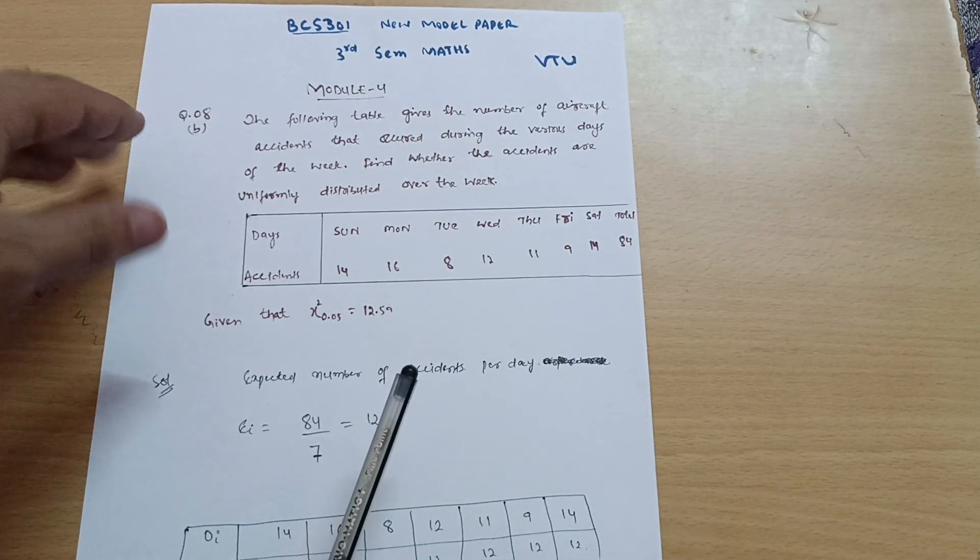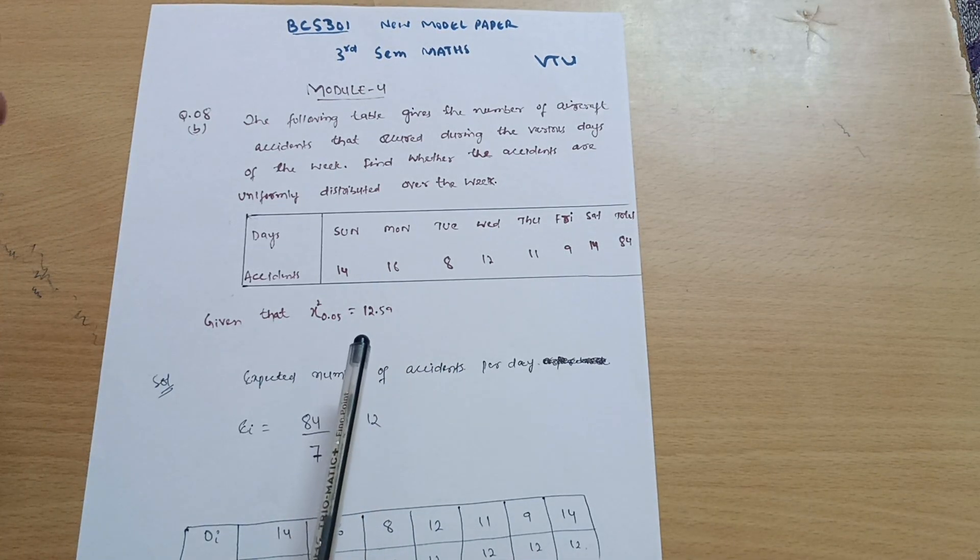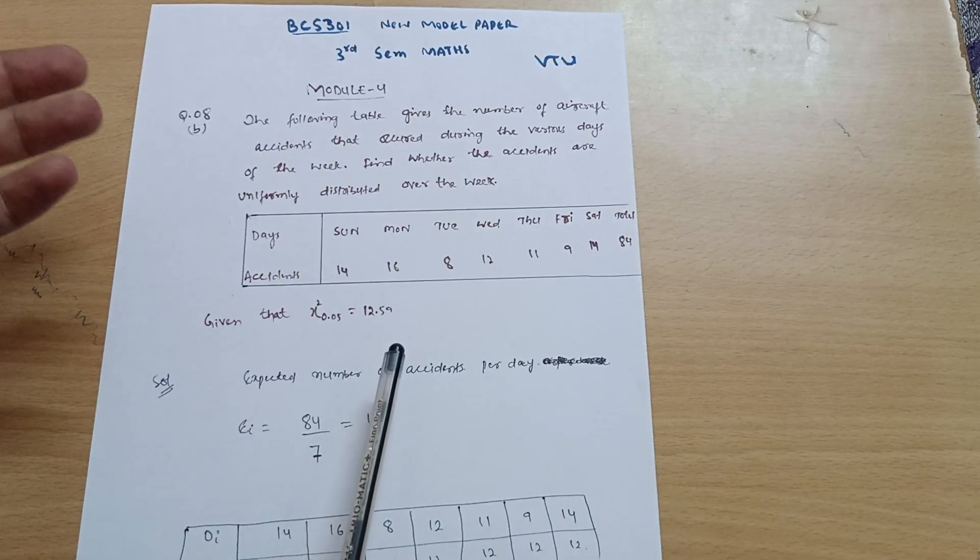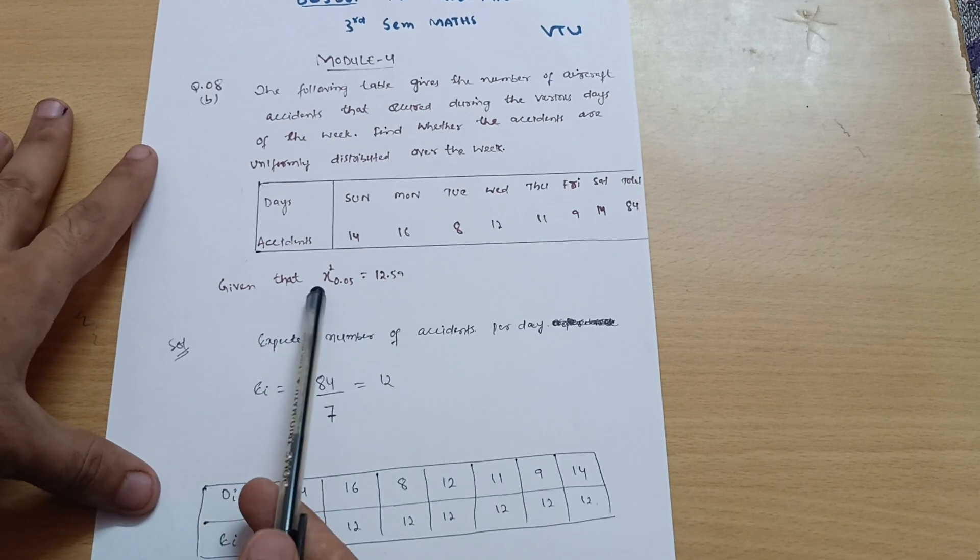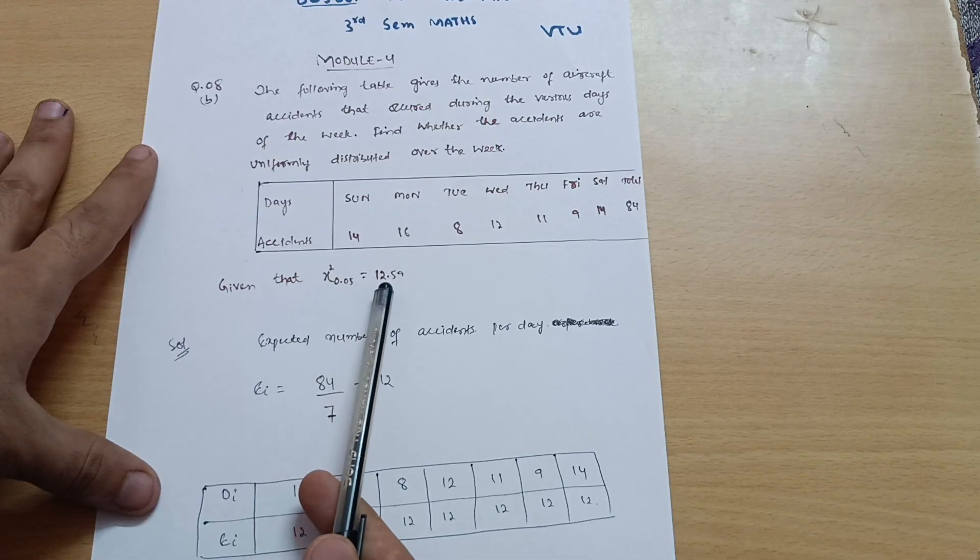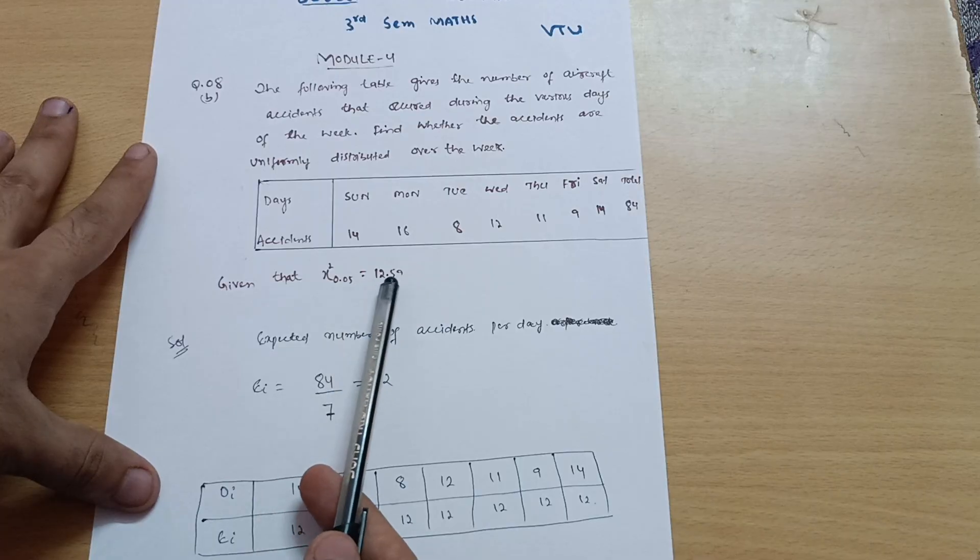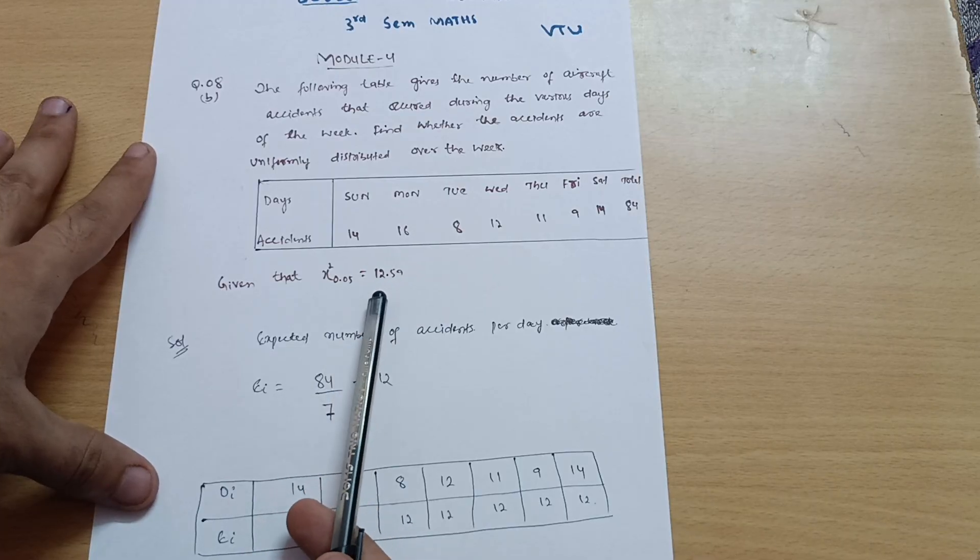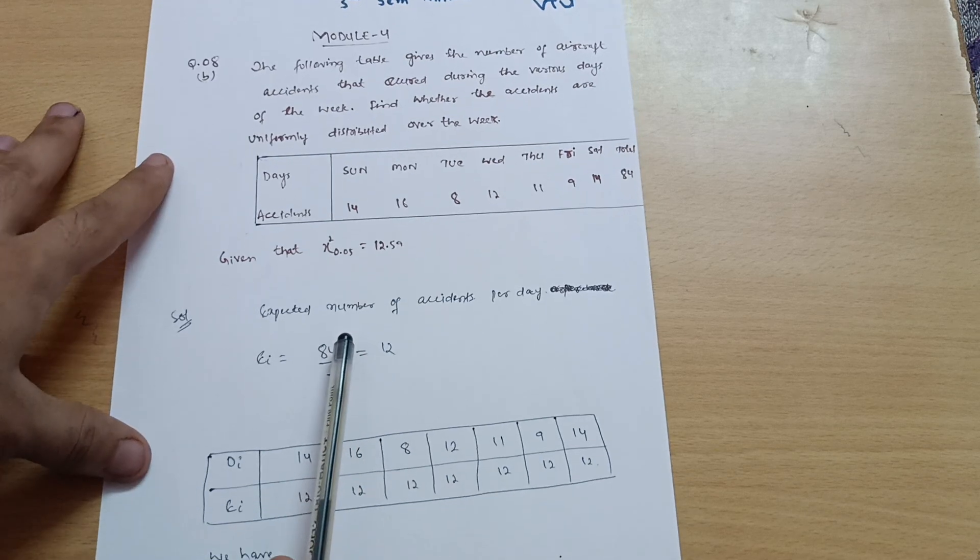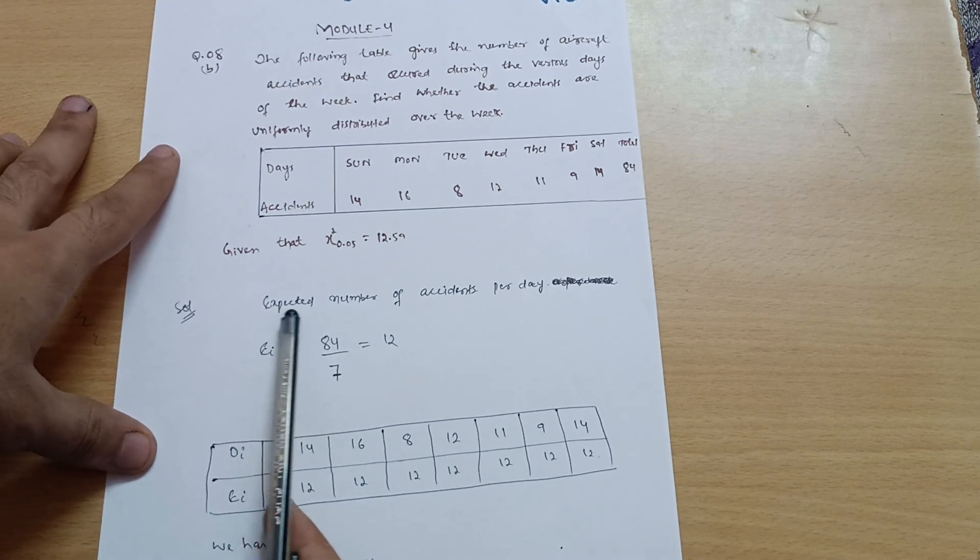In the chi-square distribution, we first take the expected values, then there is the formula, and accordingly we put down the values. Given that chi-square at 5% level of significance is equal to 12.59, if we get the chi-square value less than this value, then the hypothesis will be accepted. If it is greater, then the hypothesis will be rejected. So first step is expected number of accidents per day.